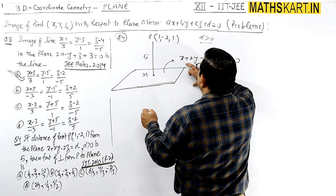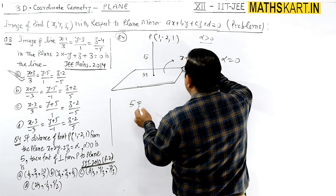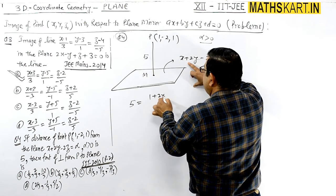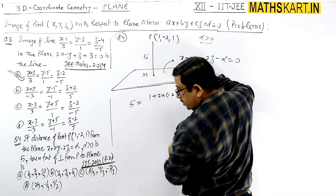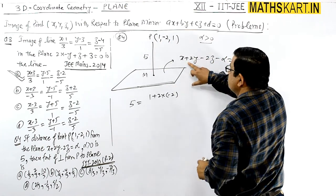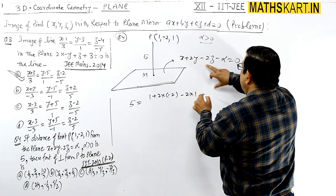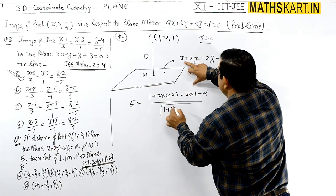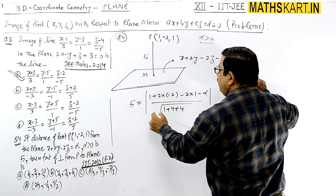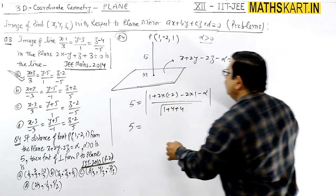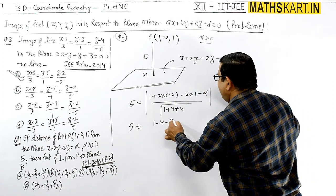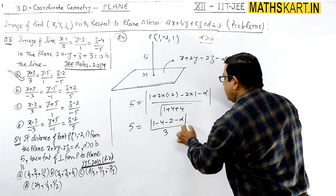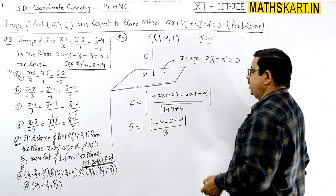This distance 5 equals: placing the point in the formula, 1 + 2(-2) - 2(1) - α divided by √(1 + 4 + 4). This should be in modulus. So 5 = |1 - 4 - 2 - α|/3. 5 = |-5 - α|/3. Removing the modulus, we'll write plus-minus. This becomes 15.